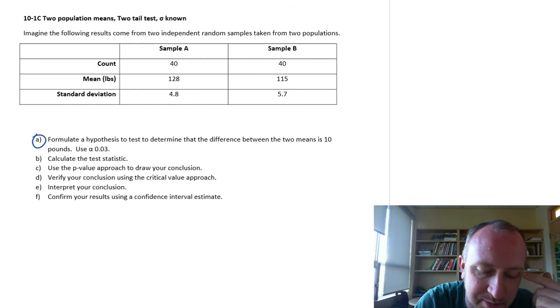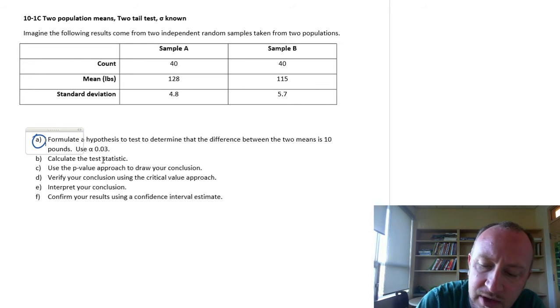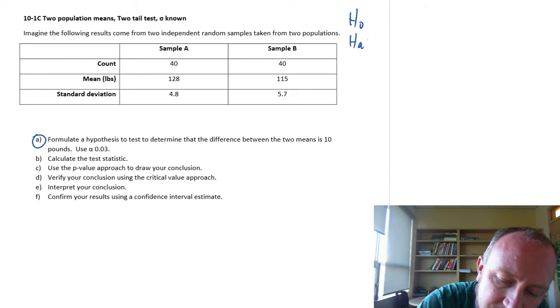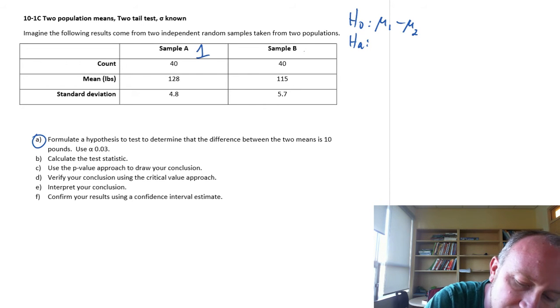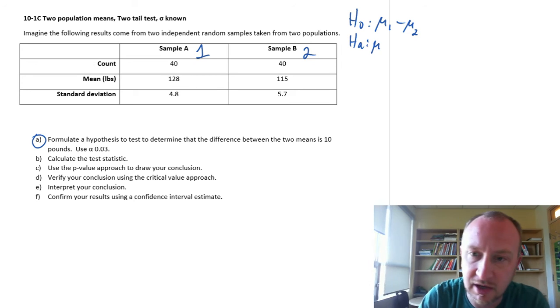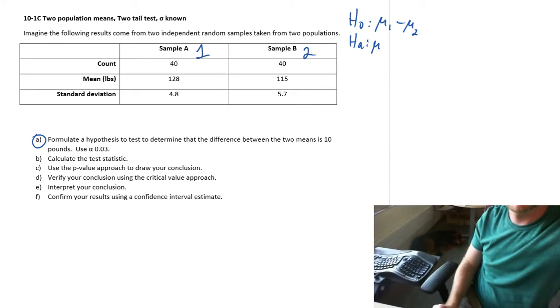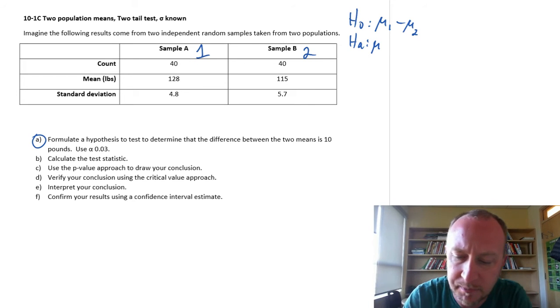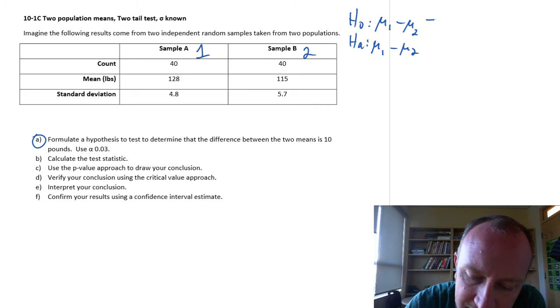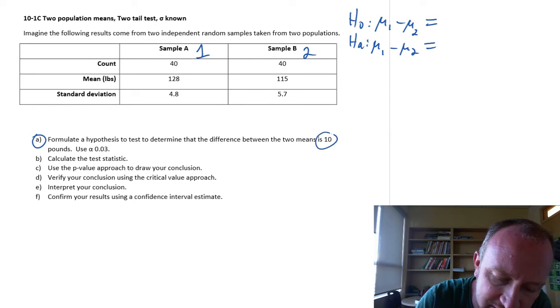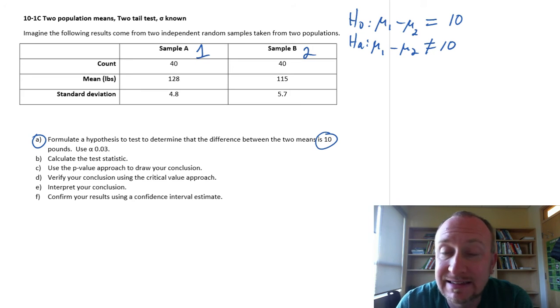Looking at part A, formulate a hypothesis test to determine that the difference between these two means is ten pounds. Use alpha 0.03. So if I come up here, I'll formulate our test. Mu 1 minus mu 2, and that difference I want to test out—the mean difference is ten pounds. So this is ten, and this is not ten. That's the only difference at this stage. We have the hypothesized difference of ten rather than a hypothesized difference of zero.